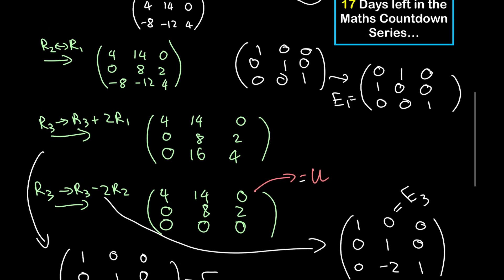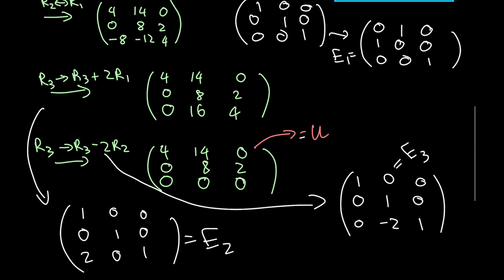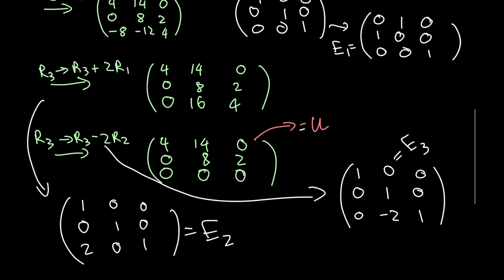We have now solved the problem and found E1, E2, E3, and matrix U in row echelon form. Elementary row operations correspond to elementary matrices, and multiplying A by these matrices produces the same result as the operations. I hope you found this video useful — please leave a like, subscribe, and feel free to leave any questions in the comments below.